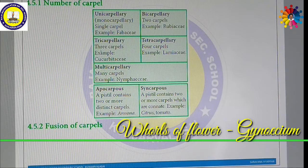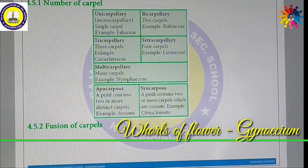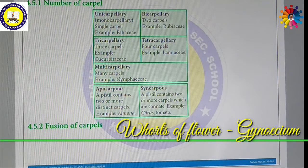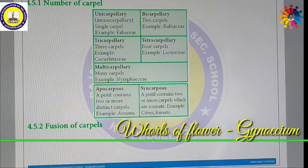If the Carpels are free from one another, it is called Apocarpous — the Pistil contains two or more distinct, separate Carpels. Sitaphal (Custard apple) is a very good example. Syncarpous means the Carpels are joined together in the Pistil. The Pistil contains two or more Carpels which are fused together, as in Citrus and Tomatoes.